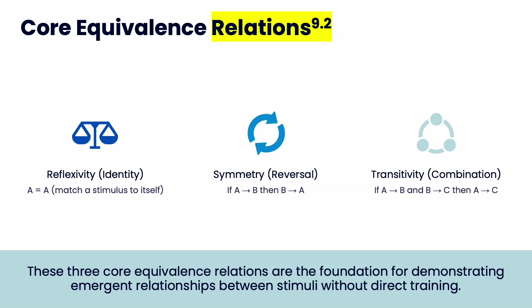Transitivity is when you can match the picture of the butterfly to the word butterfly to the sound 'butterfly' — when you can match all three back and forth: A to B, B to C, then A to C. The stimuli need to match in some way; there has to be something connecting them, but they all have to be different. If they're exactly the same, we're in reflexivity.